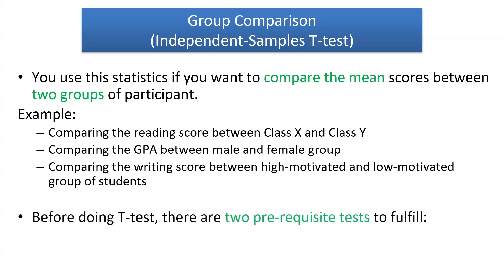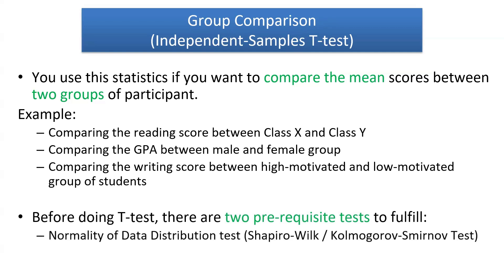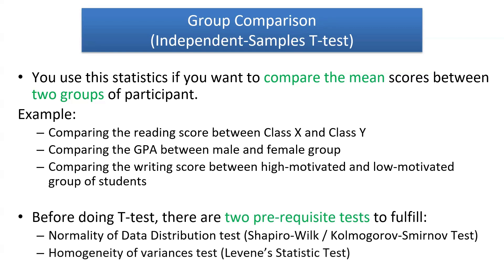Before doing a t-test there are two prerequisite tests to fulfill. The first one is a normality of data distribution test — we are going to use the Shapiro-Wilk and Kolmogorov-Smirnov test. The second one is a homogeneity of variances test using Levene's statistics test. We are going to discuss these two prerequisite tests before going to the t-test.